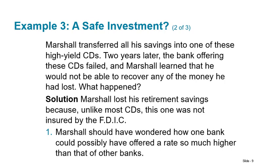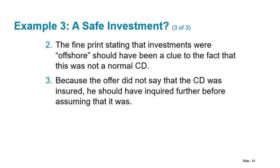Two years later, the bank offering these CDs failed and Marshall learned that he would not be able to recover any of the money he had lost. It sounds like those CDs were not insured by the FDIC. When you see these claims, you have to wonder: how can one bank possibly give higher rates than another? There's got to be something going on. The fact was that if he had read the fine print, he could have seen that the investments were offshore and therefore not insured. You kind of get what you pay for — that's the lesson learned here.